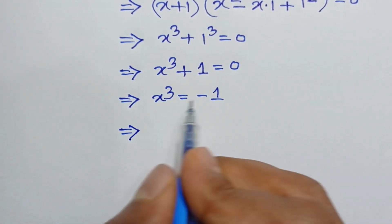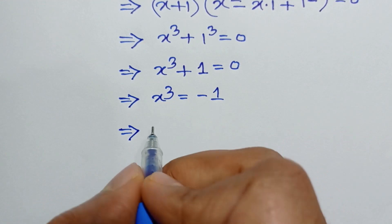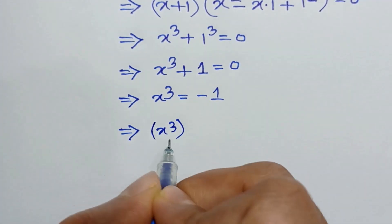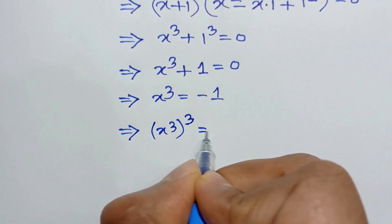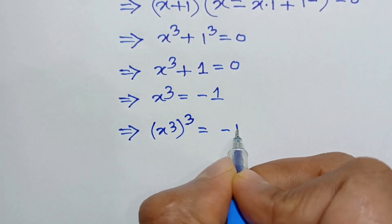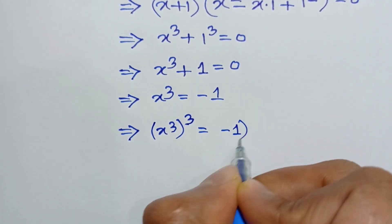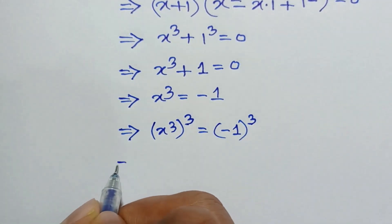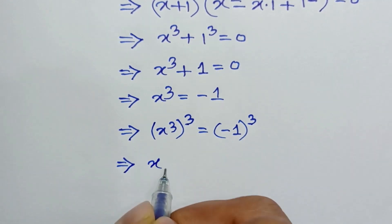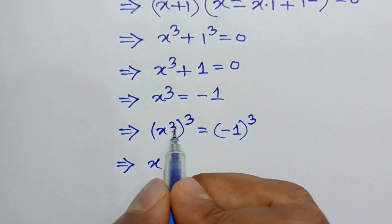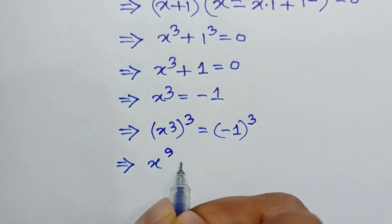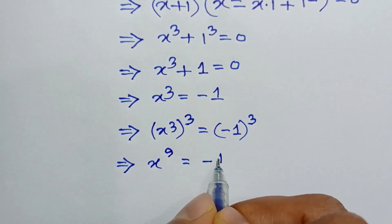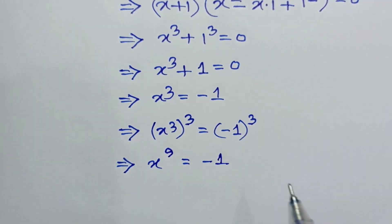If we cube both sides, we can write x cubed whole cube equals negative 1 cubed, or x to the power 3 times 3, which is x to the power 9, equals negative 1 cubed equals negative 1.